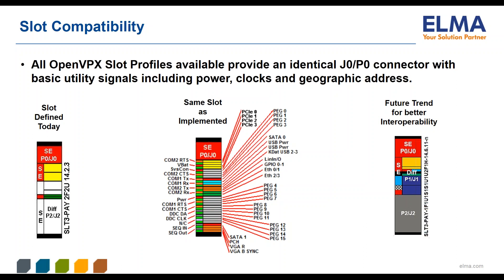A recent trend is the move from slots with a lot of open user-defined area to slots that are more fully defined. On the left is an example of a popular 3U slot profile — it only defines two fat pipes and two ultra-thin pipes, and there is a lot of open user-defined area. The middle figure demonstrates how a typical manufacturer actually uses all of that undefined area. This practice of customizing the user-defined area has made it difficult for designers to find second sources for VPX cards.